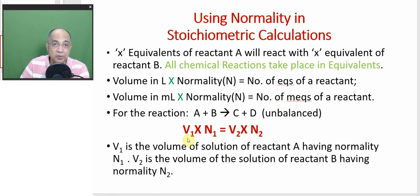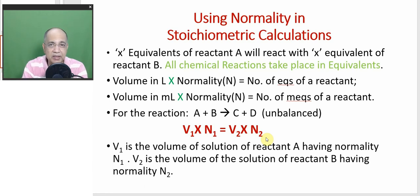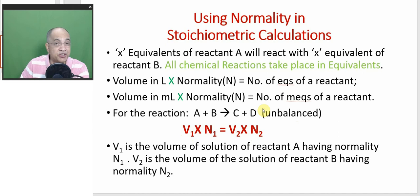V1N1 equals V2N2. The number of milliequivalents will be the same, the number of equivalents will be the same. In terms of moles, these may not be the same — that depends on the stoichiometry of the balanced equation, whether it is 2:3 or 1:3 or 5:8. But in terms of equivalents, it is always 1:1. That is the advantage of handling a problem in terms of equivalents. V1 is the volume of solution A having normality N1, V2 is the volume of solution B, and N2 is the normality of solution B. That is the slogan of a titration experiment.